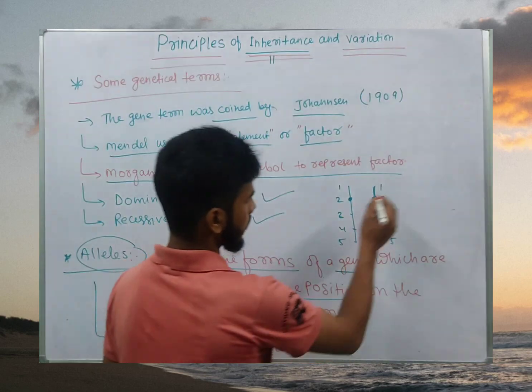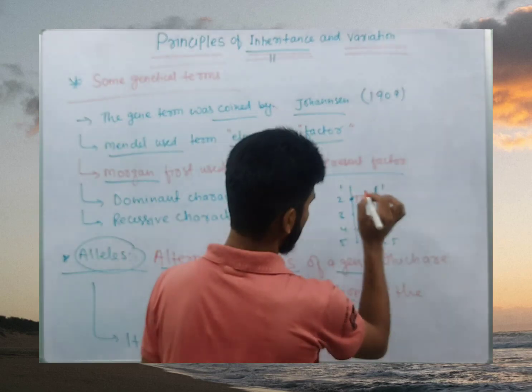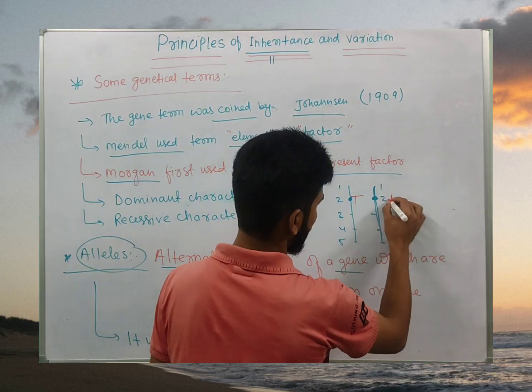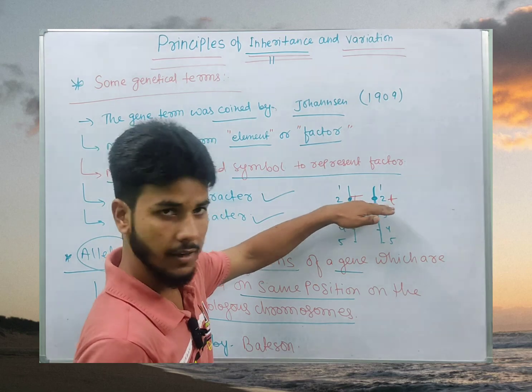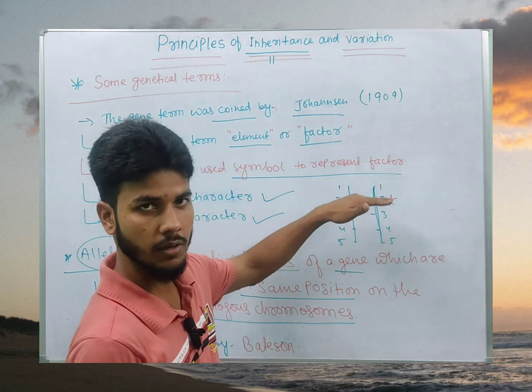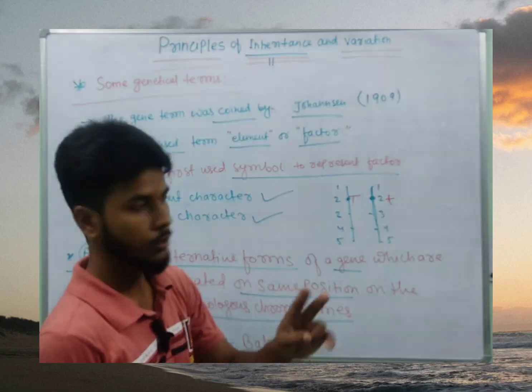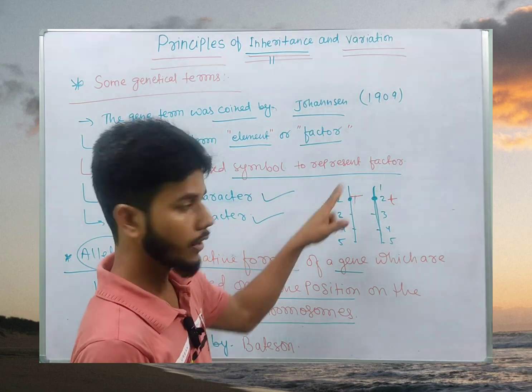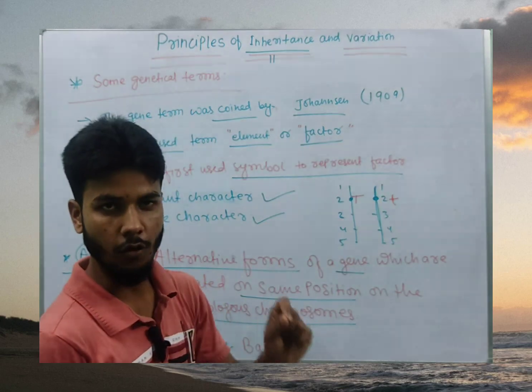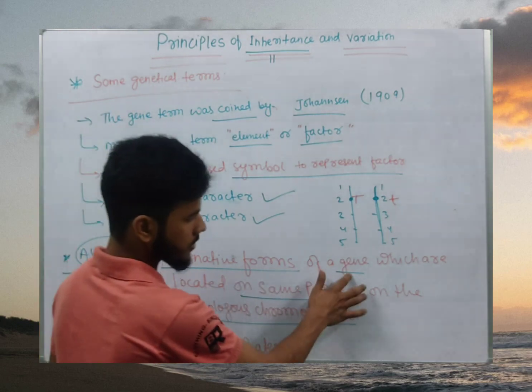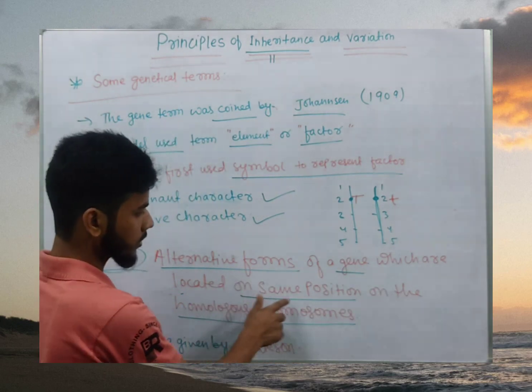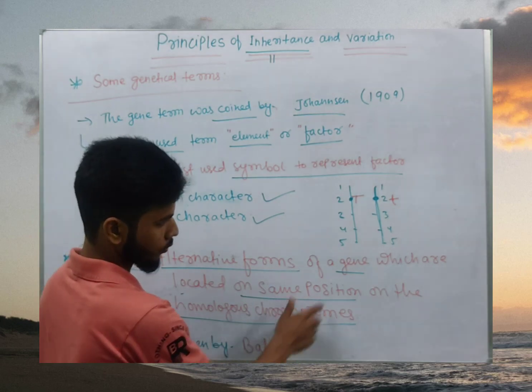So basically, if it is present here capital T or it may be small t, that is basically, yeh kis ke liye hai hai, height ka character hai. Us ke liye gene responsible hai hai, T. T ka doh form hai. T kya hai, gene hai. Or capital T, small t, kya hai, height kya alag-alag form hai. Inhinko, downshaan Meho, borota hai, Anye. So what I said, it is the alternative forms of a gene which are located on same position on the homologous chromosome.